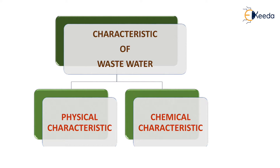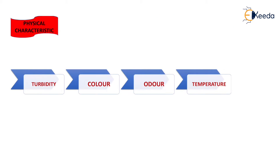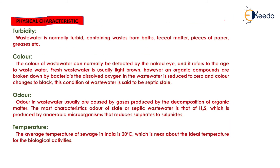Generally there are two types of characteristics present in wastewater: first is the physical characteristic and next is the chemical characteristic. Physical characteristics are briefly classified into four parts: turbidity, color, odor, and temperature.